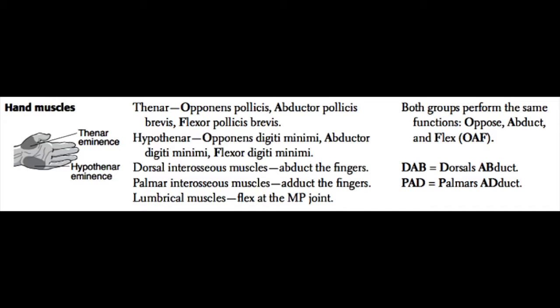Next, we have the dorsal and palmar interosseous muscles. These sit in the palm or the dorsum of the hand between the different metacarpal bones. The dorsal interosseous muscles serve to abduct the fingers, whereas the palmar interosseous muscles serve to adduct the fingers. The mnemonic is DAB-PAD: Dorsal's Abduct, Palmer's Adduct.